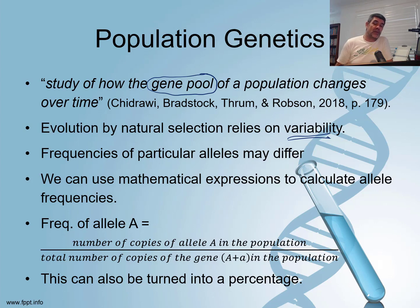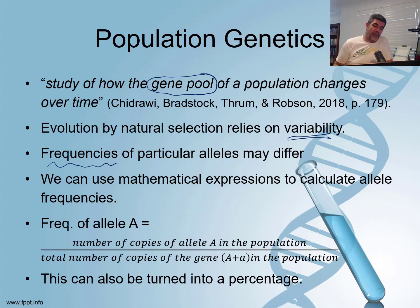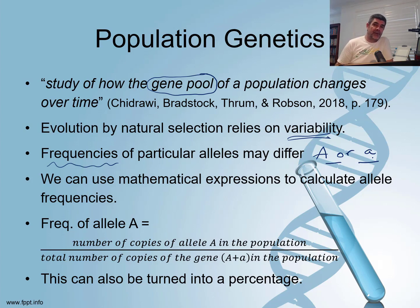This is one of the reasons why population geneticists want to know about allele frequencies — that is, how often particular alleles are present in a population. If you think about the simplest form of this, a capital A or a little a, given a situation where there are only two alleles — not multiple alleles, just two alleles — the dominant or the recessive.